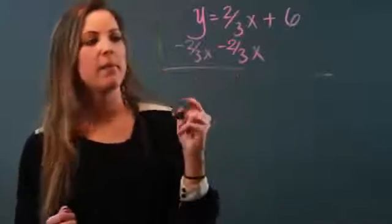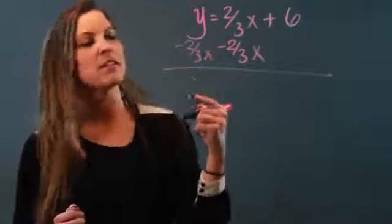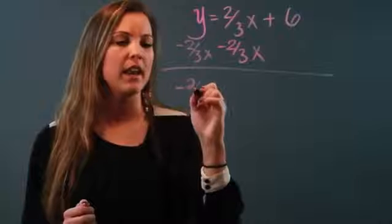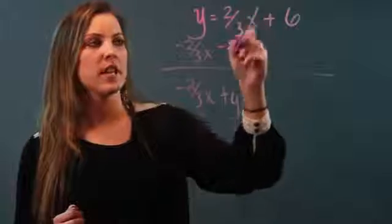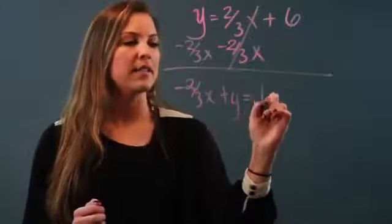So when I do that, I'm going to write my x first because that's the format. Negative two-thirds x plus y equals, two-thirds minus two-thirds cancel themselves out, bring down my six. So I'm almost there.